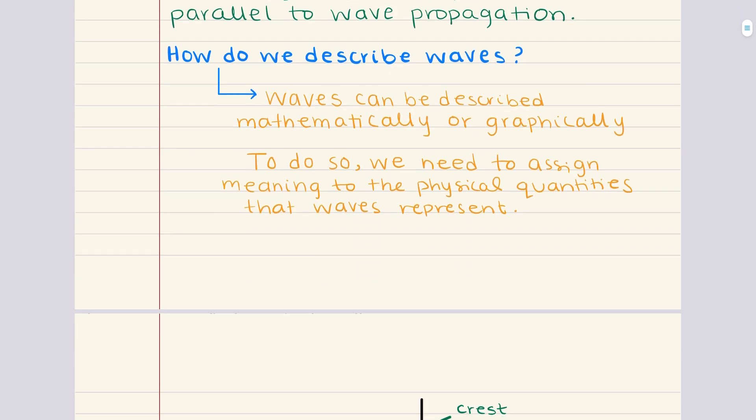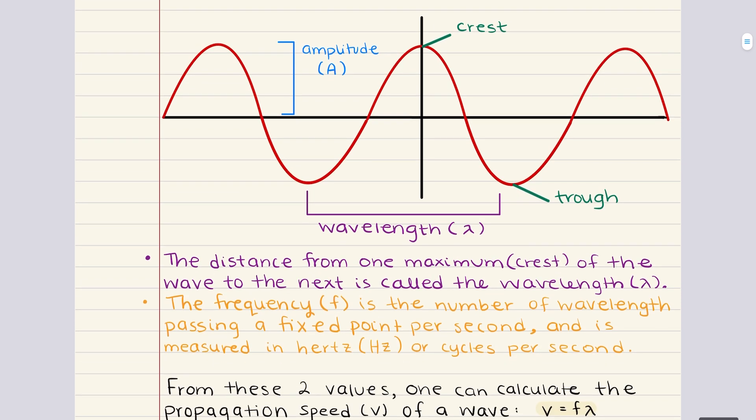Now, despite their differences, both transverse and longitudinal waves share many characteristics, and they follow similar principles. They each have measurable properties such as wavelength, frequency, and amplitude, which we're going to explore next.